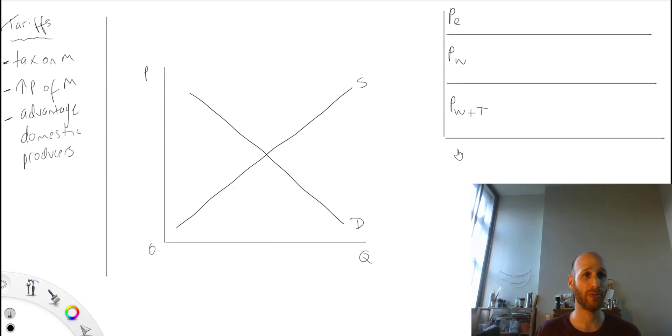Let's have a look over on the left hand side here. If we look at tariffs, we know quite simply that they are a tax on imports. By placing a tax on imports, tariffs will increase the price of imports. By increasing the price of imports, they're going to give an advantage to domestic producers, and in this way they are a form of protection.